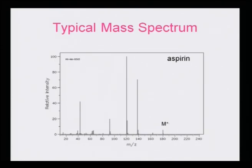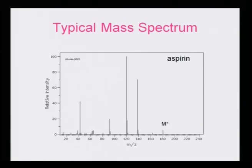A typical mass spectrum of aspirin shows a molecular ion peak (M⁺·) at 180, with peaks at 139, 120, and so on. The peak at 120 is the tallest while the molecular ion peak at 180 is the shortest, meaning the molecular ion quickly fragments to 139, which then breaks to 120. The fragment at 120 has a stabilizing effect, so its relative abundance is much higher than the molecular ion peak.